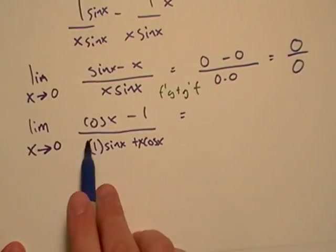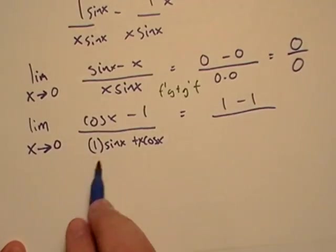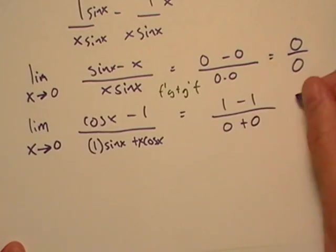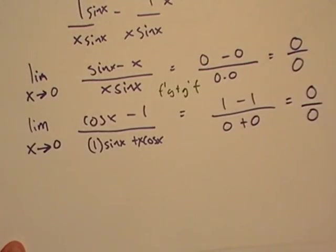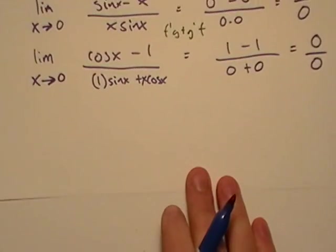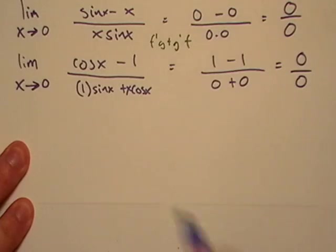So where does that leave me? Well, that leaves me with one minus one when I take the limit, over, let's see, zero plus zero, and that's also an indeterminate form, okay. So still didn't get the answer, but at least we can still use our rule. Okay, so I'm just going to differentiate this thing again.